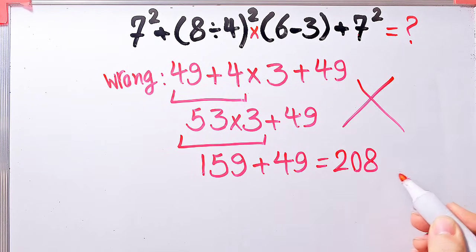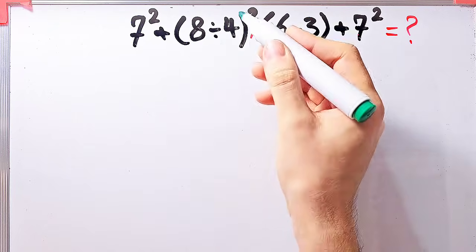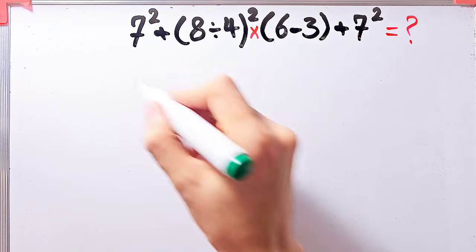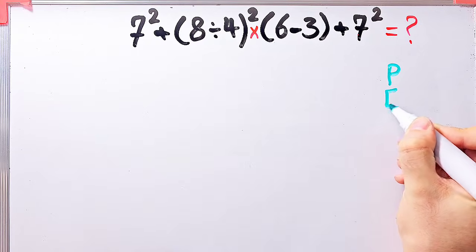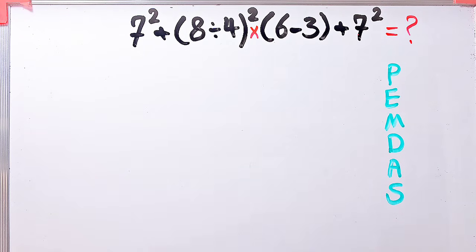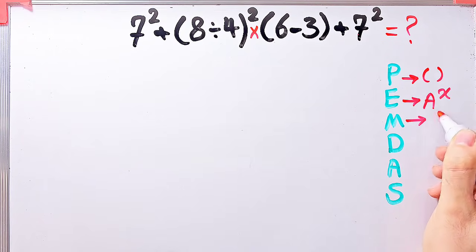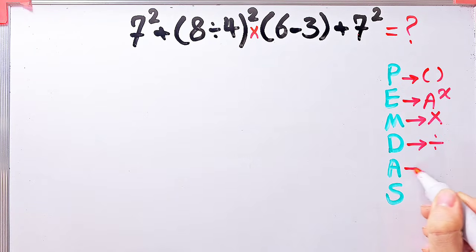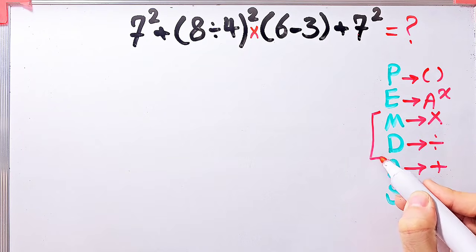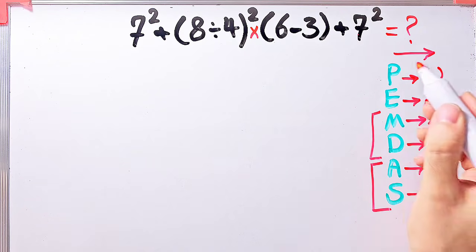Let's solve this question step by step. We have exponent, addition, parentheses, division, multiplication, and subtraction. We follow the order of operations — PEMDAS — which shows the priority of mathematical operations. P for parentheses, E for exponent, M for multiplication, D for division, A for addition, S for subtraction. Multiplication and division have the same priority; addition and subtraction have the same priority. When both appear, we start from the left. First we simplify the parentheses.